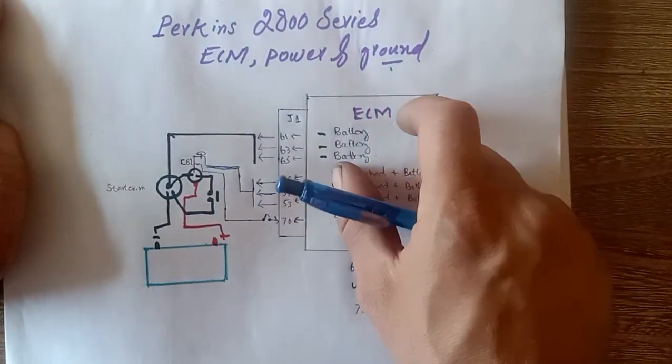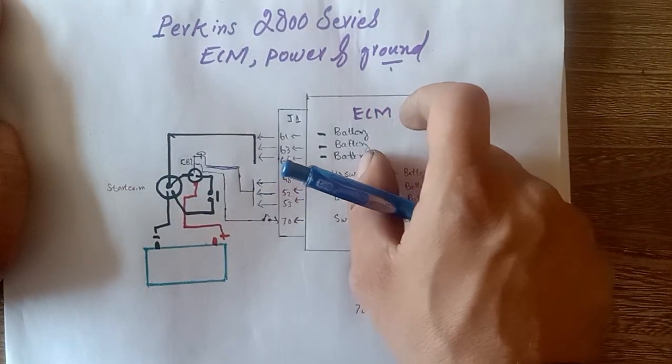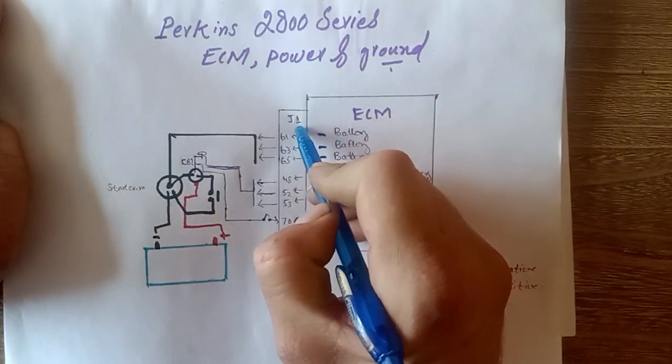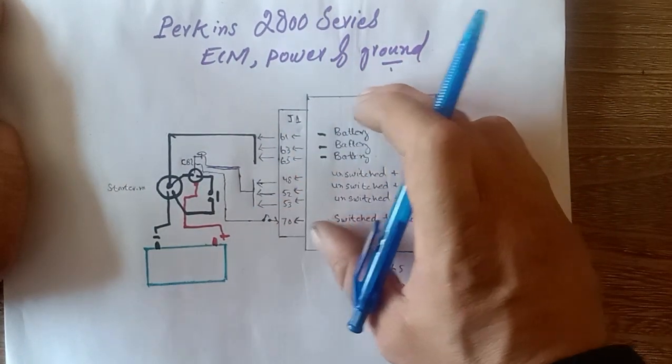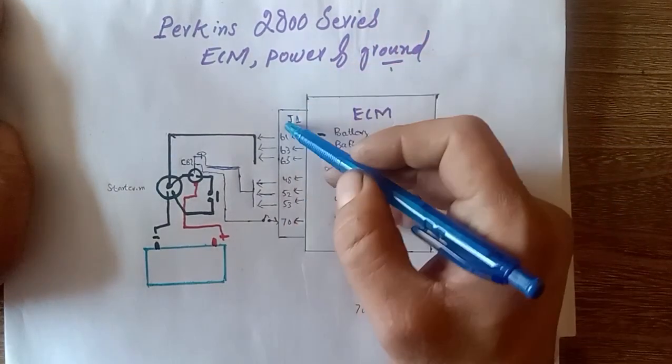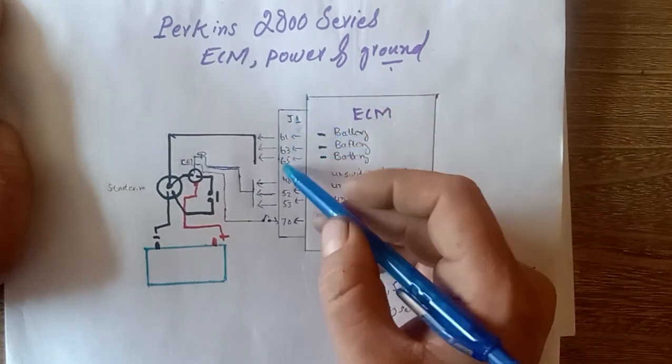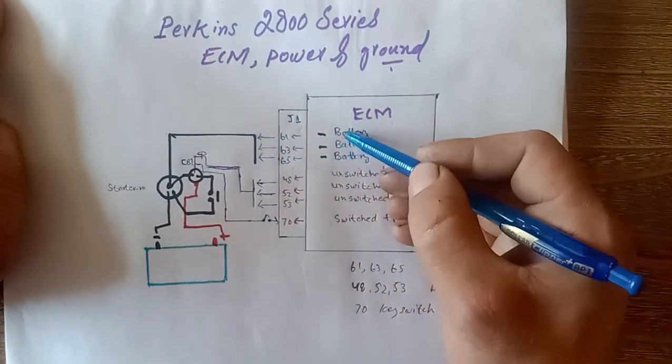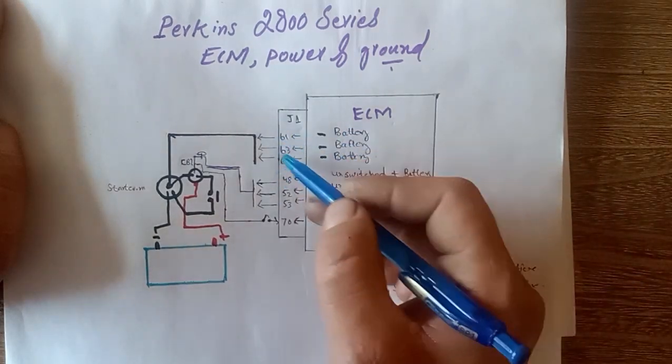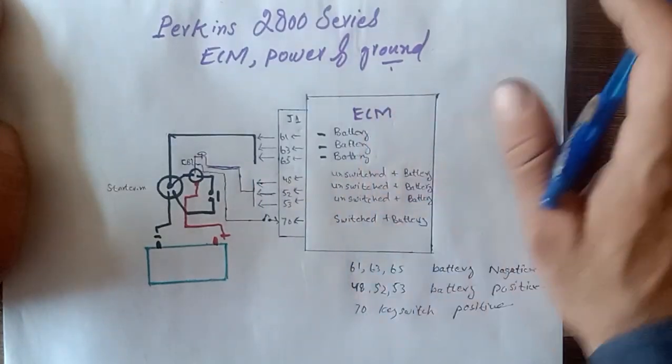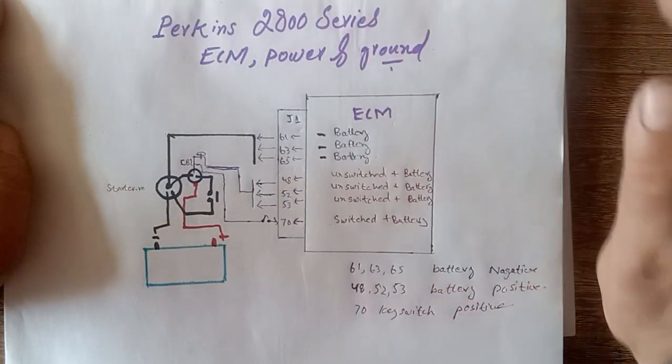As you can see here, this is the typical diagram of ECM. And here you can see J1. J1 means is your ECM J1 connector. In the J1 connector, your pin 61, pin 63, pin 65, this is your battery negative which is going to your starting circuit.